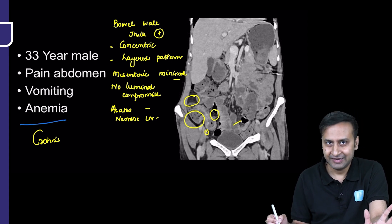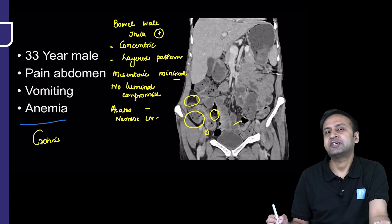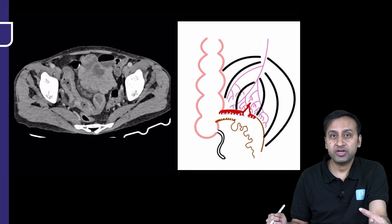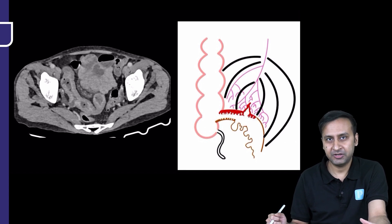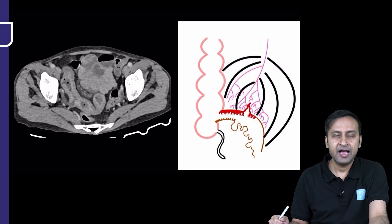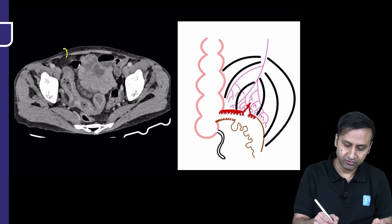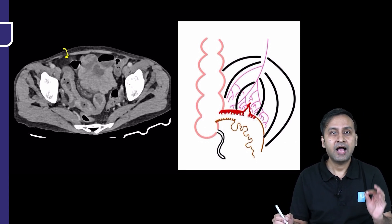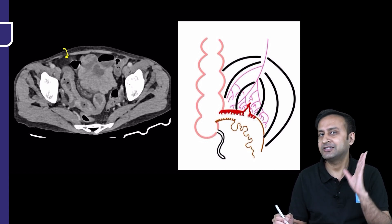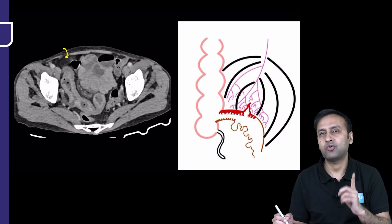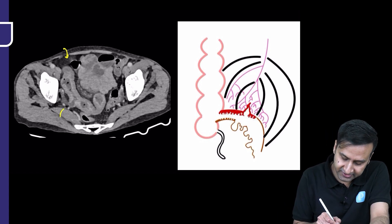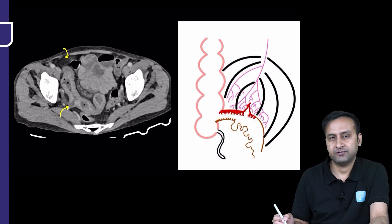Biopsy and colonoscopy were performed and confirmed Crohn's disease. But there was something else hidden in this case. Looking at the most important image of this patient — I want you to identify the single most important finding that favors Crohn's over tuberculosis.